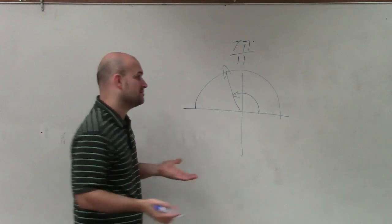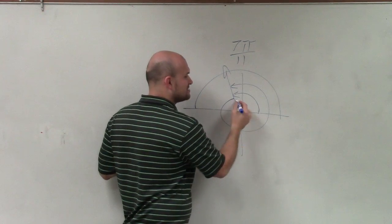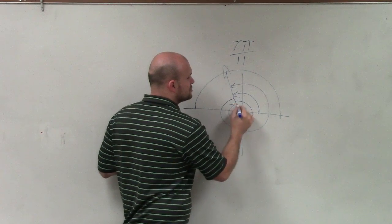Again, if I want to find my coterminal angles, I want to find the largest positive. That means I'm going to have to add 2 pi and the smallest negative, meaning I'm going to have to subtract 2 pi.